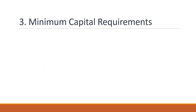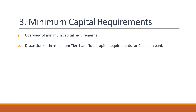Minimum Capital Requirements: The CR Framework sets out minimum capital requirements that banks must meet to comply with regulatory capital requirements. There are separate minimum requirements for Tier 1 and Total Capital Ratios. The minimum Tier 1 Capital Ratio is 8.5% and the minimum Total Capital Ratio is 10.5%. Banks must maintain these ratios on an ongoing basis to comply with regulatory capital requirements.